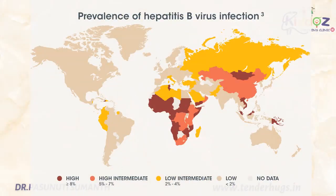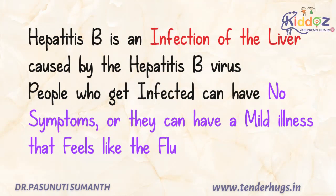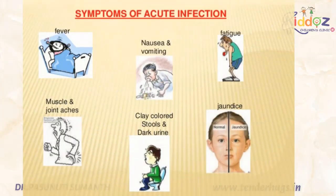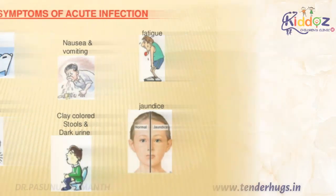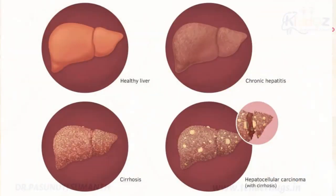Coming to the severity of the disease, the estimated cases worldwide are 400 million per year, and an estimated 1.4 million people die worldwide from Hepatitis every year. People who get infected can have no symptoms or a mild flu-like illness. Some can be sicker with fever, nausea, vomiting, and jaundice lasting a few weeks — this is called acute hepatitis. Others can become lifelong carriers of the virus and develop liver problems such as cirrhosis or liver cancer.